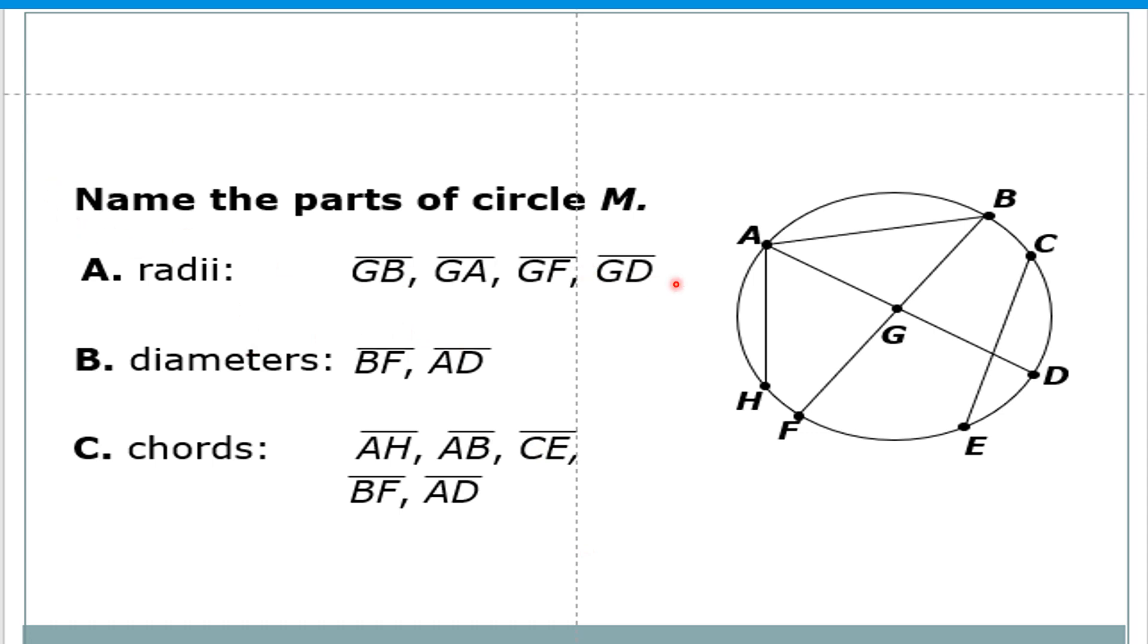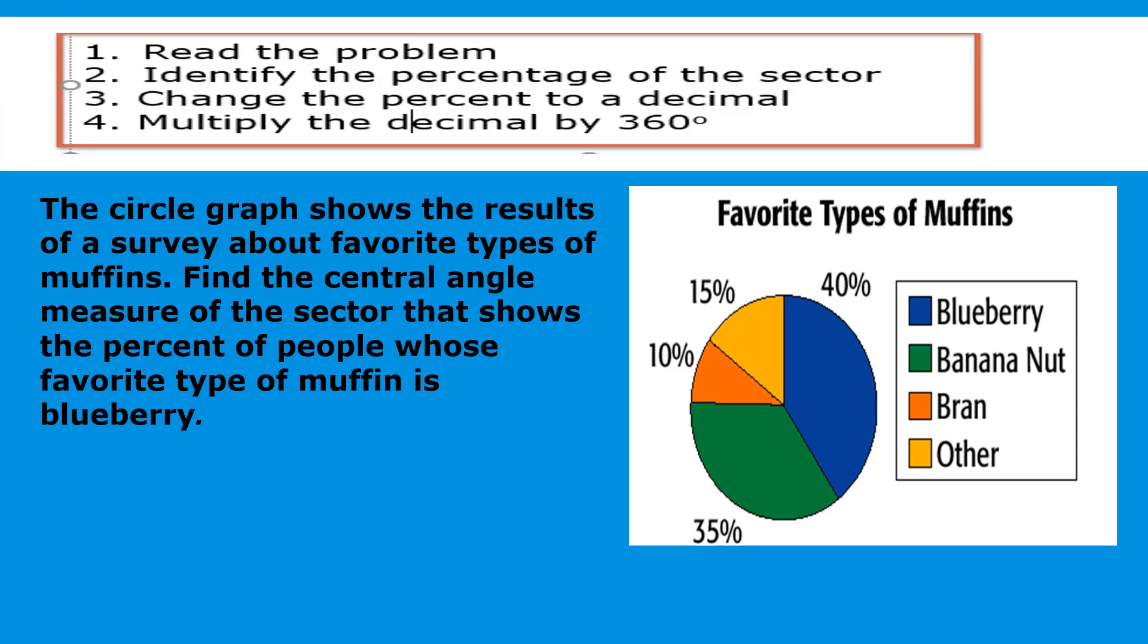Let's have here, name the parts of circle M. We have the radii: BA, GA, DF, and GD. The diameters are BF and AD. And the chords are AH, AB, CE, BF, and AD. Actually, all of these are chords. These are segments that are part of the circle. Let us continue.